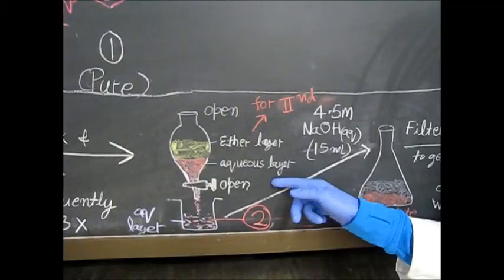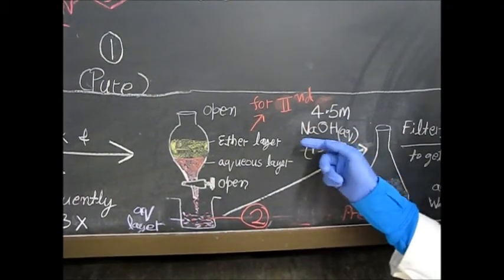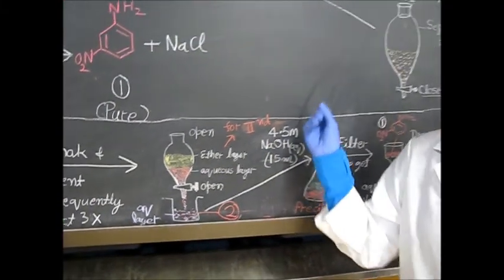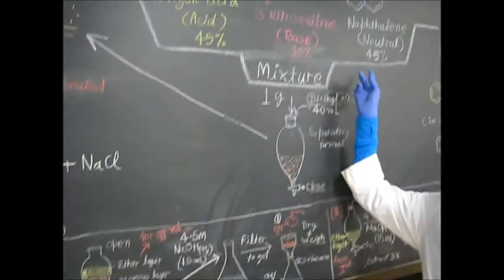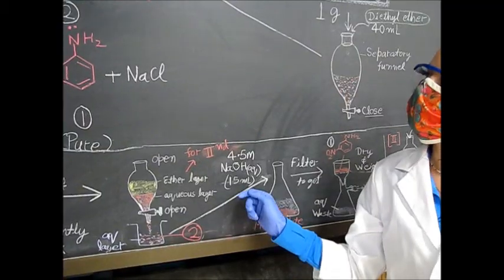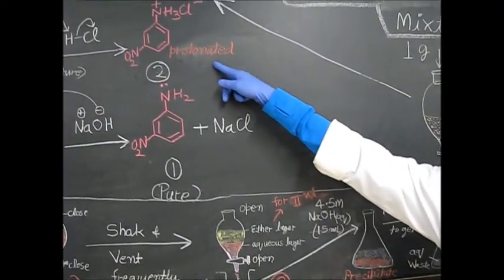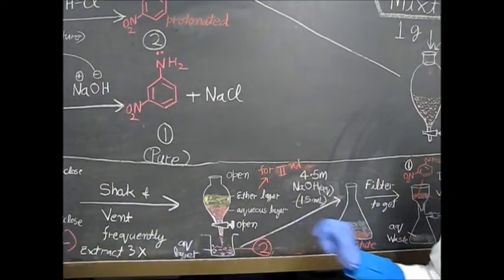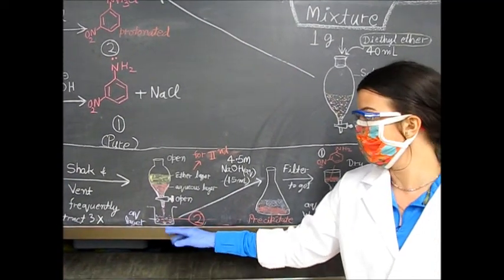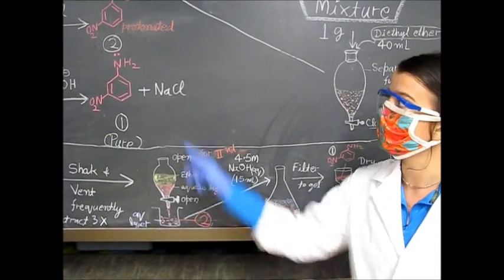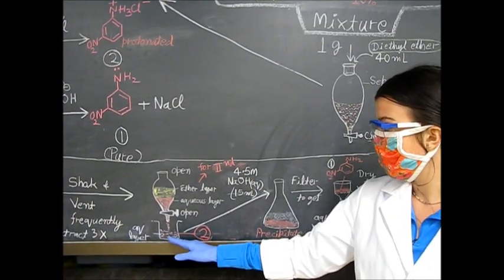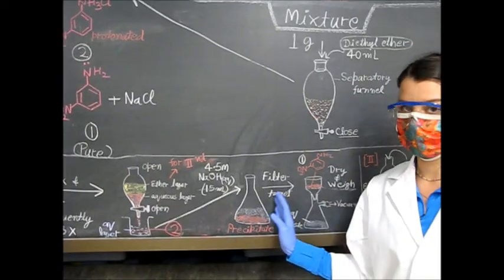In the separatory funnel, there are two different layers. The top layer is going to be our ether layer, which contains the benzoic acid and naphthalene. The bottom aqueous layer is going to contain our protonated nitroaniline. Once we separate the bottom layer out — which contains the protonated form — we will save that and perform experiments on it afterward.